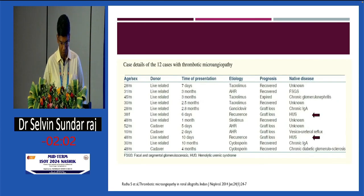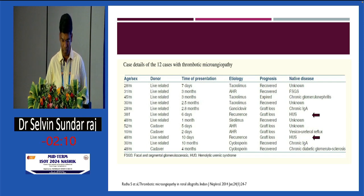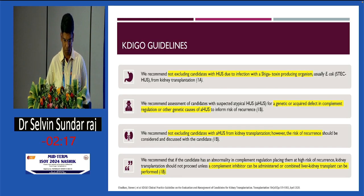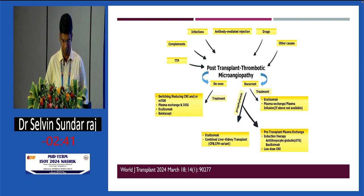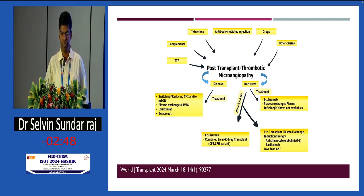An Indian study published in the Indian Journal of Nephrology found that the most common causes were drugs and rejection, while patients with atypical HUS had recurrence and graft loss. KDIGO guidelines state that if a Shiga-toxin producing organism causes atypical HUS, patients should not be excluded from transplantation, and always evaluate for a genetic component. The risk of recurrence should be considered, and the guidelines suggest giving a complement inhibitor or combined liver-kidney transplant. To summarize the management of post-transplant TMA: identify the trigger and treat it. If eculizumab is available, administer it. If not, try plasma exchange and other protocols such as the Netherlands study strategy.